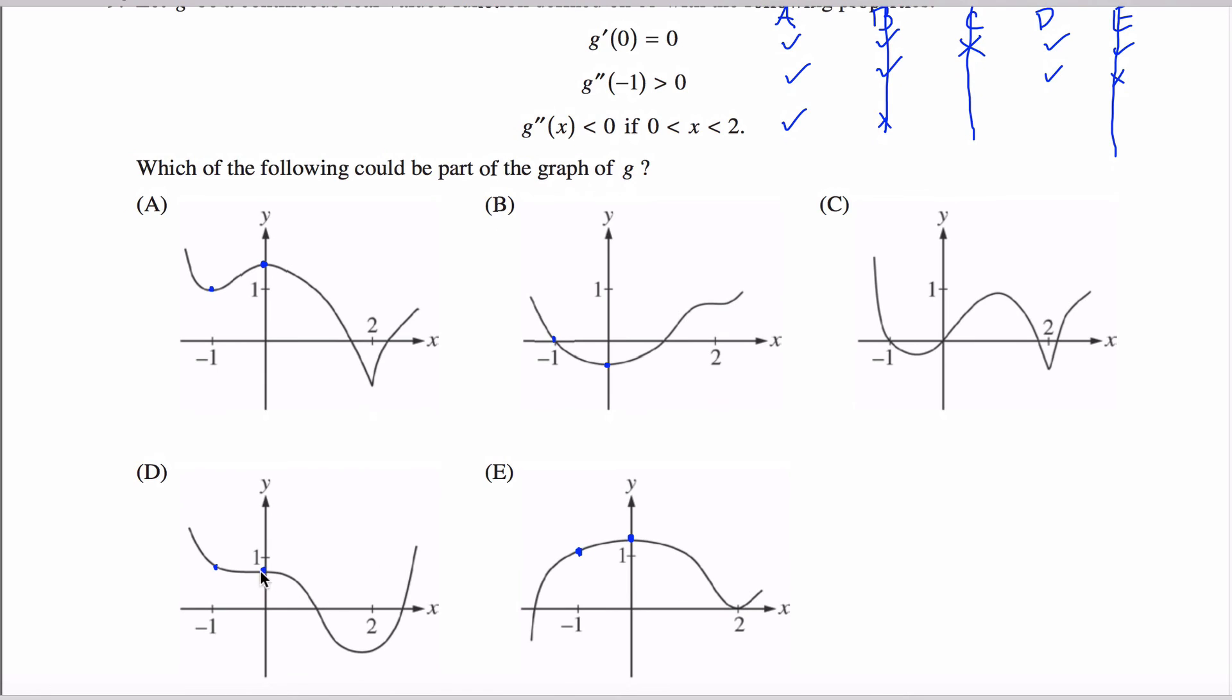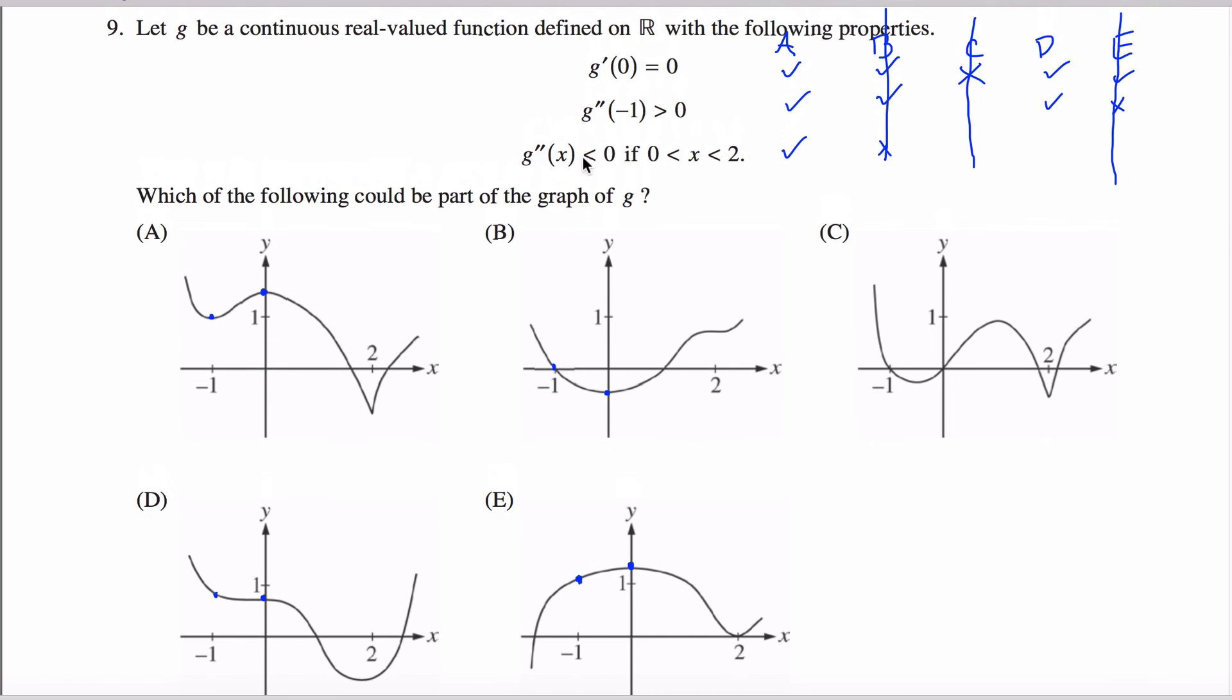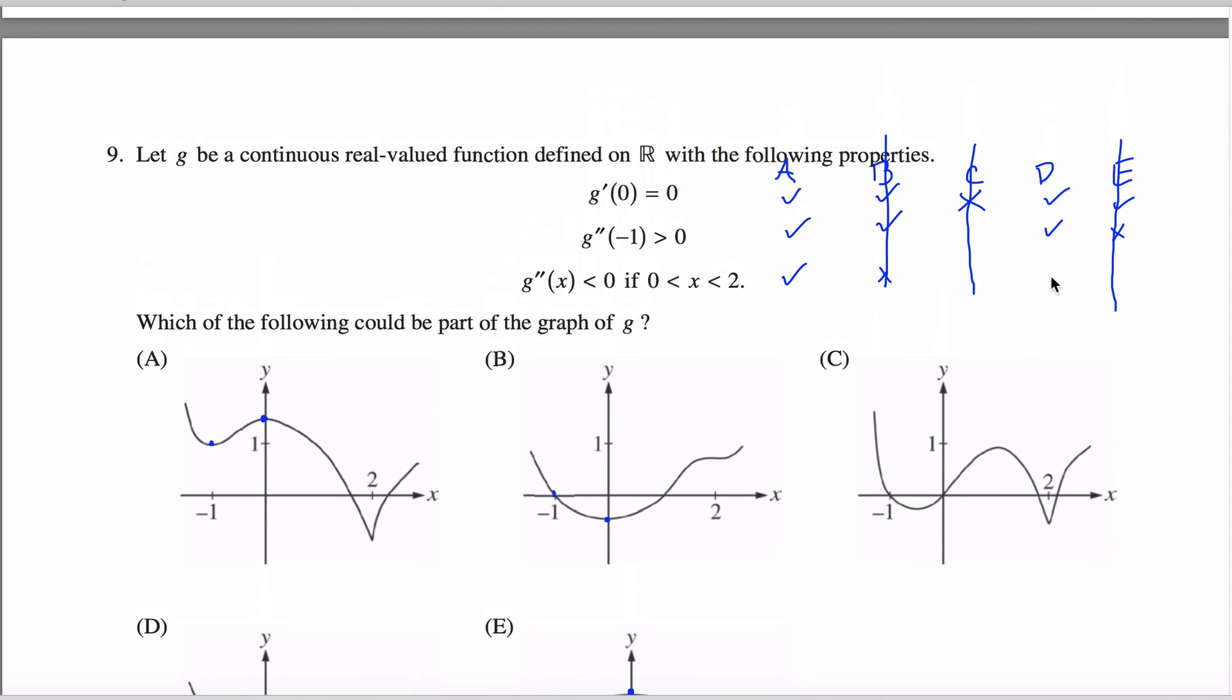What about D? Well, when you stare at D here, here's zero and here's two. And note that it's concave down for a while and then concave up for a while. And I'm supposed to be concave down the whole time. So right here where it's concave up, that's bad. So my answer cannot be D either.